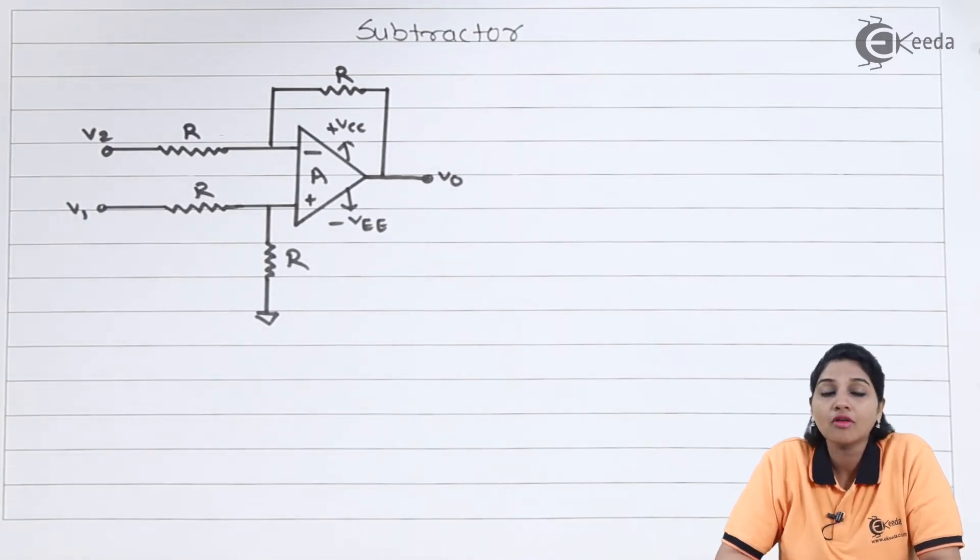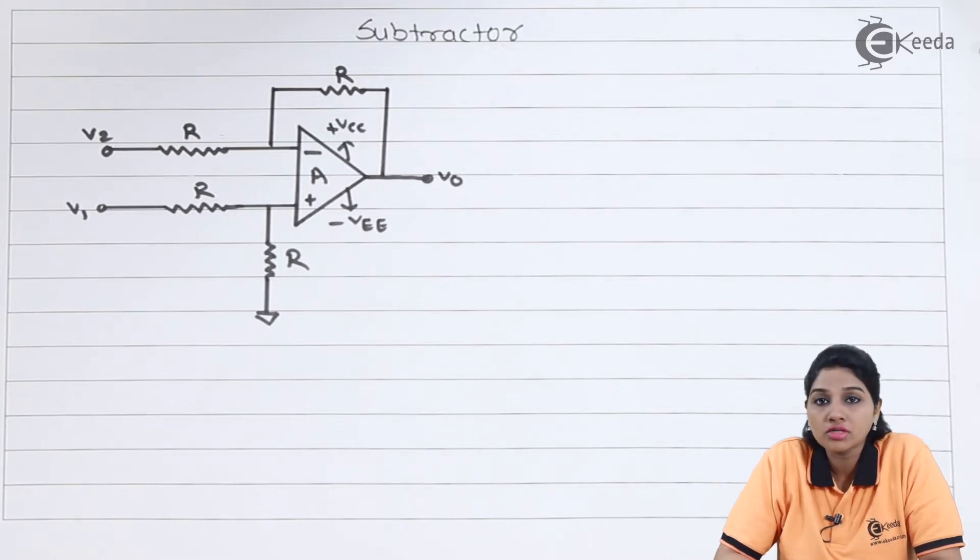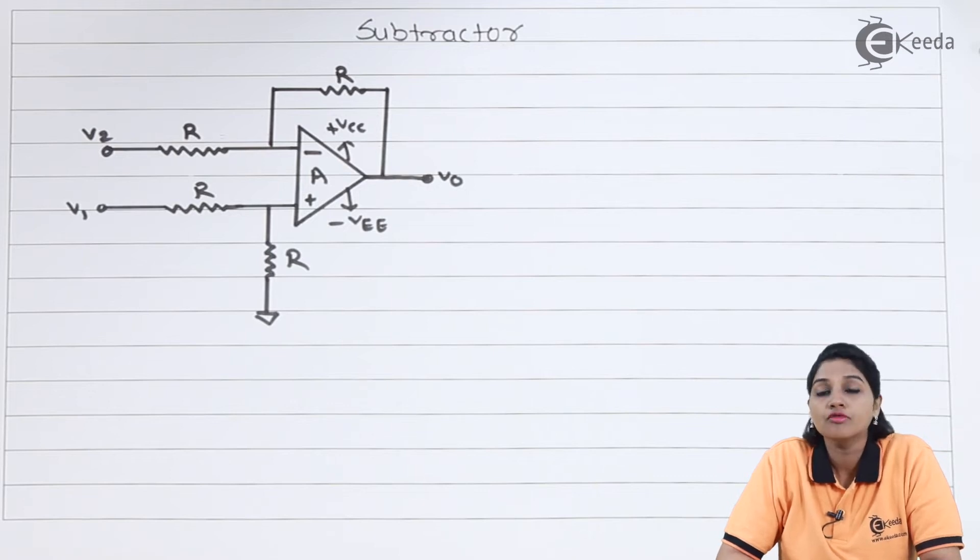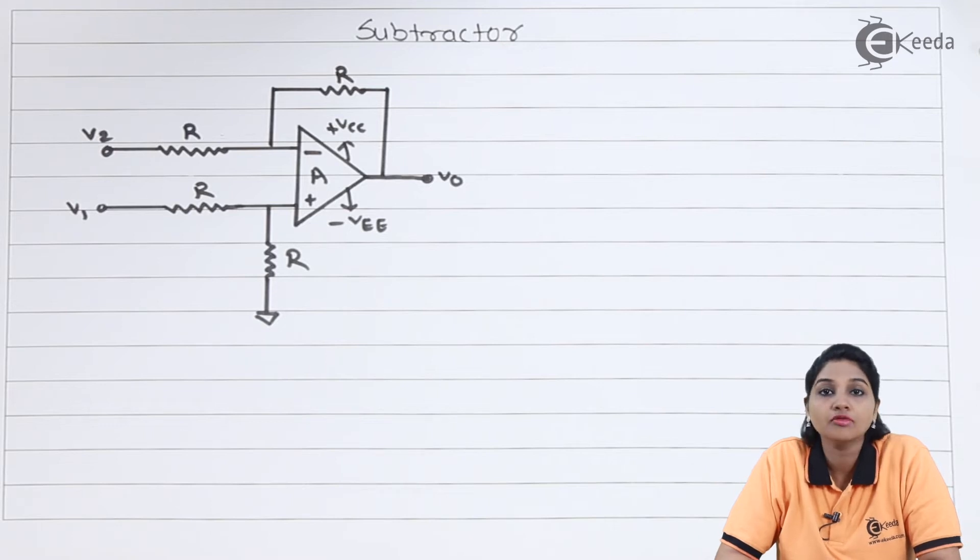In case of difference amplifier, we have different values of RF and R1. That's why the gain of difference amplifier depends upon the value of RF and R1. If we change the value of RF and R1, gain of the circuit gets changed and therefore there will be a corresponding change in the output voltage.